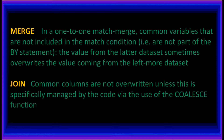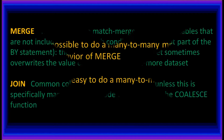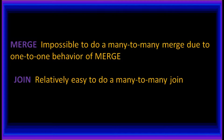In JOIN, common columns are not overwritten unless this is specifically managed by the code via the use of the COALESCE function. MERGE is impossible to do a many-to-many merge due to the one-to-one behavior of MERGE. JOIN makes it relatively easy to do a many-to-many join.